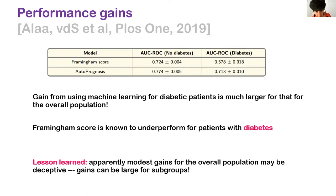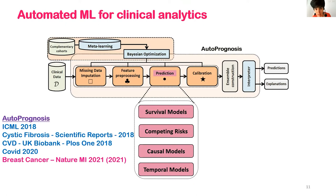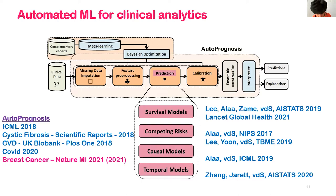While today's focus is on AutoPrognosis and Adjutorium, AutoML tools have also been built for survival analysis, competing risks, causal models, and temporal models. AutoPrognosis has been applied beyond breast cancer to cardiovascular disease, cystic fibrosis, and COVID-19.